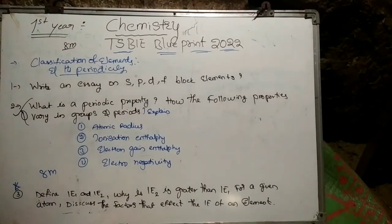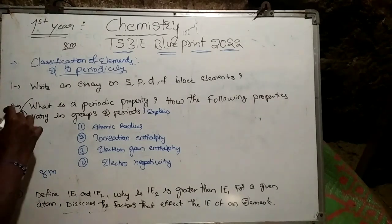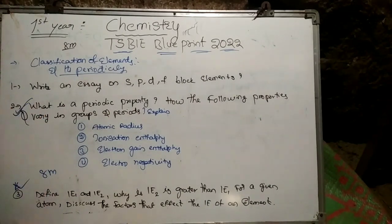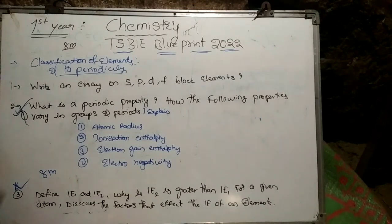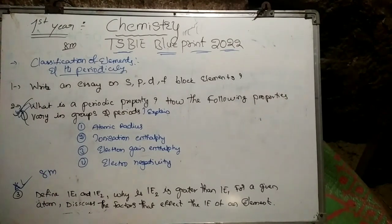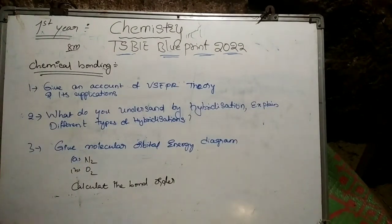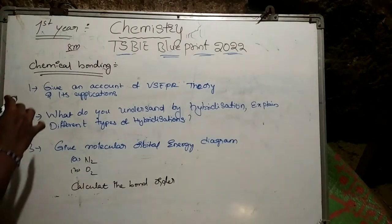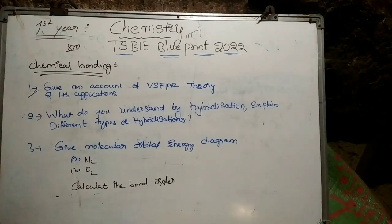So from atomic structure there are two questions, and from classification of elements there are also important questions. Moving on to chemical bonding, there are three important questions. The first question is: give an account of the VSEPR theory and its applications.